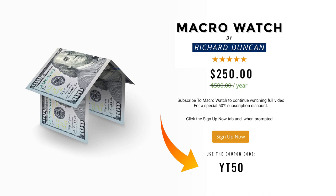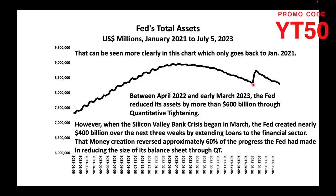However, when the Silicon Valley bank crisis began in March, the Fed created nearly $400 billion over the next three weeks by extending loans to the financial sector. That money creation reversed approximately 60% of the progress the Fed had made in reducing the size of its balance sheet through QT.